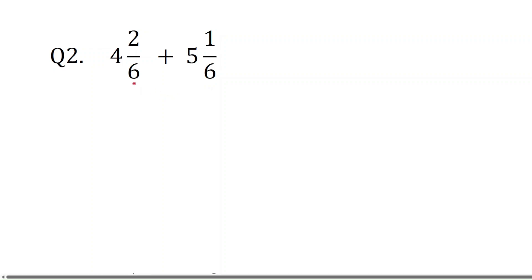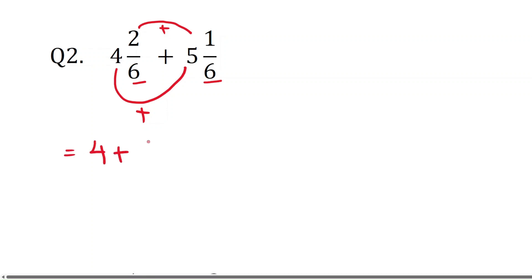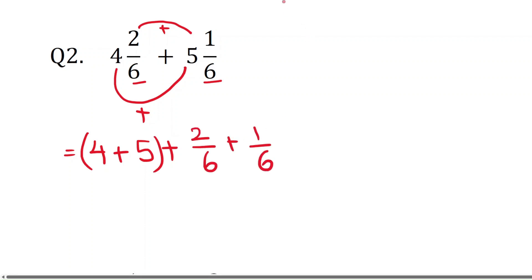In this second problem we are having the same denominators. First add the whole numbers and then add the fractions. That will be 4 plus 5 for the whole numbers, and 2/6 plus 1/6 for the fractions. This gives 9 plus — since we have like denominators, just add the numerators: 2 plus 1 is 3/6.